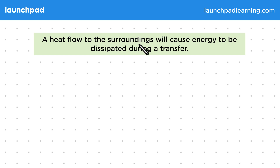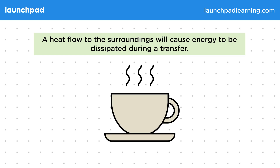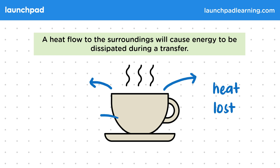A heat flow to the surroundings will cause energy to be dissipated during a transfer. A heat flow occurs between two points when there is a difference in temperature between them. For example, let's consider a hot drink. There is a heat flow between the hot drink and the cooler surroundings, so as heat is lost, the drink cools down.